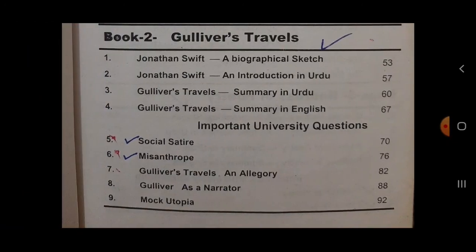اس کے بعد ہمارے پاس Gulliver's Travels ہے، written by Jonathan Swift۔ یہ ایک بہت مشہور prose work اور novel ہے۔ یہ Augustan Age سے ہے — 18th century کو age of Pope، age of reason، age of enlightenment بھی کہا جاتا تھا۔ اس age کی سب سے اہم characteristic satire تھی۔ اس کا main question بھی social satire پر ہی آئے گا — کہ کس طرح politics پر satire دکھائی جاتی ہے، جیسے misuse of human intellect جو Laputa میں دکھائی جاتی ہے۔